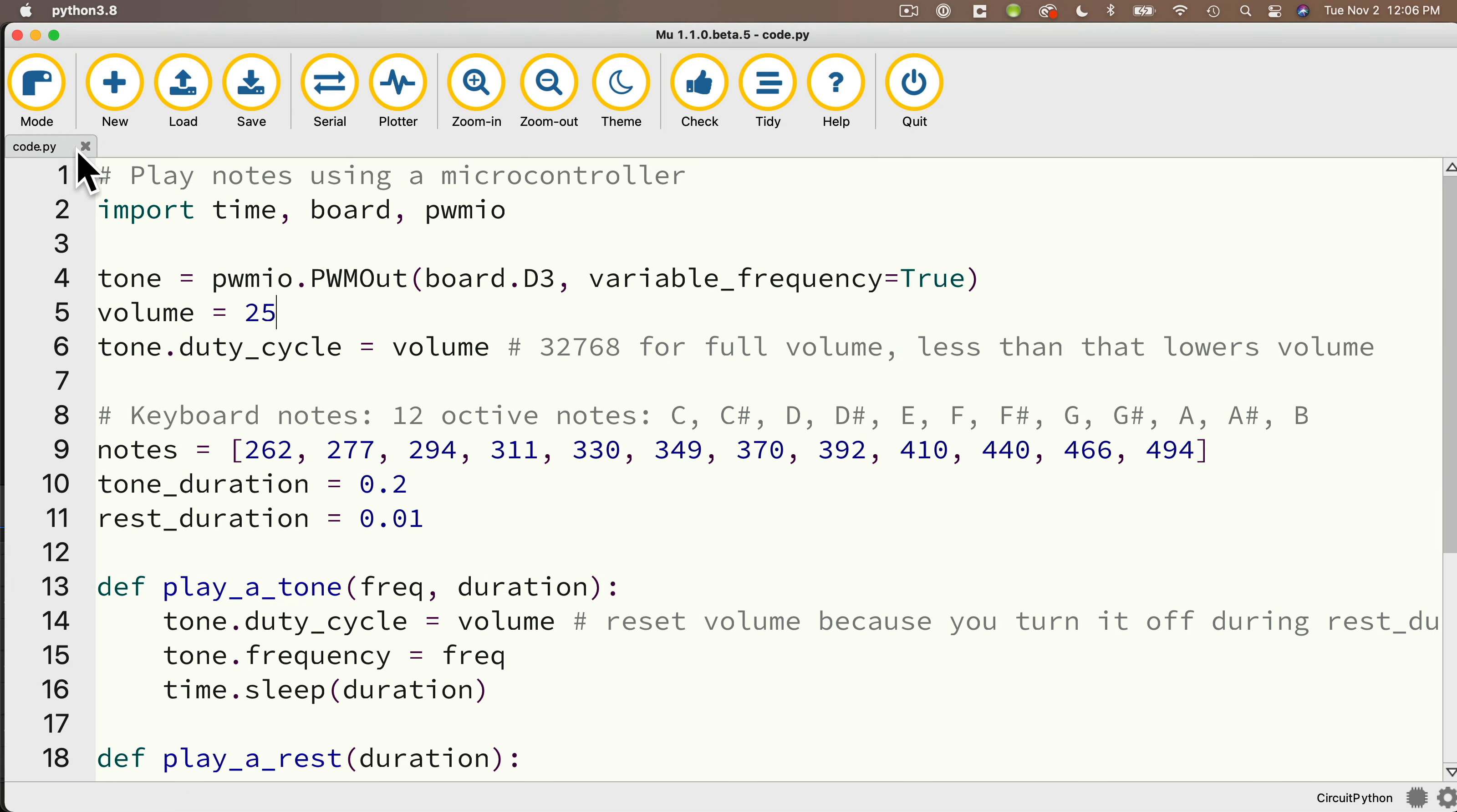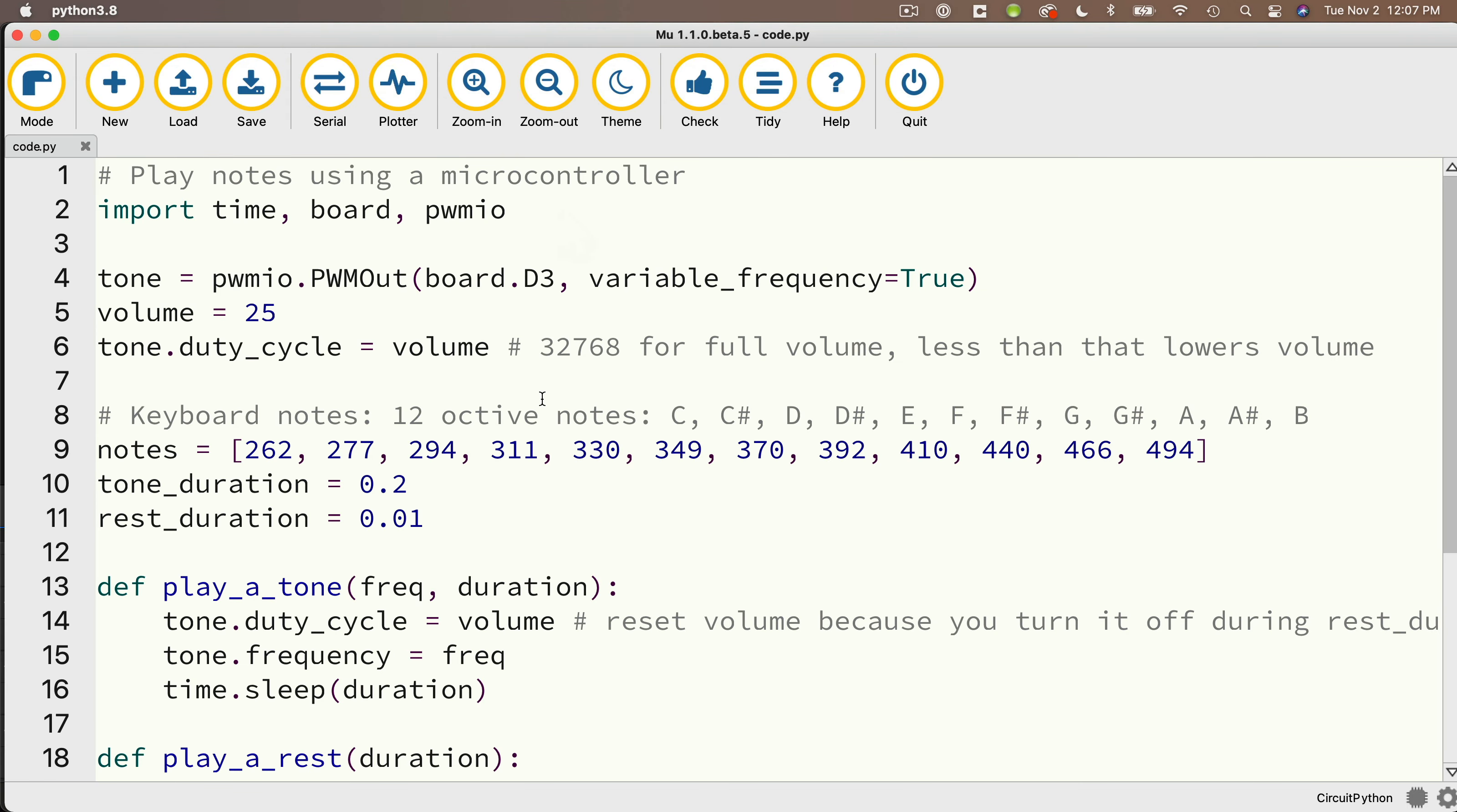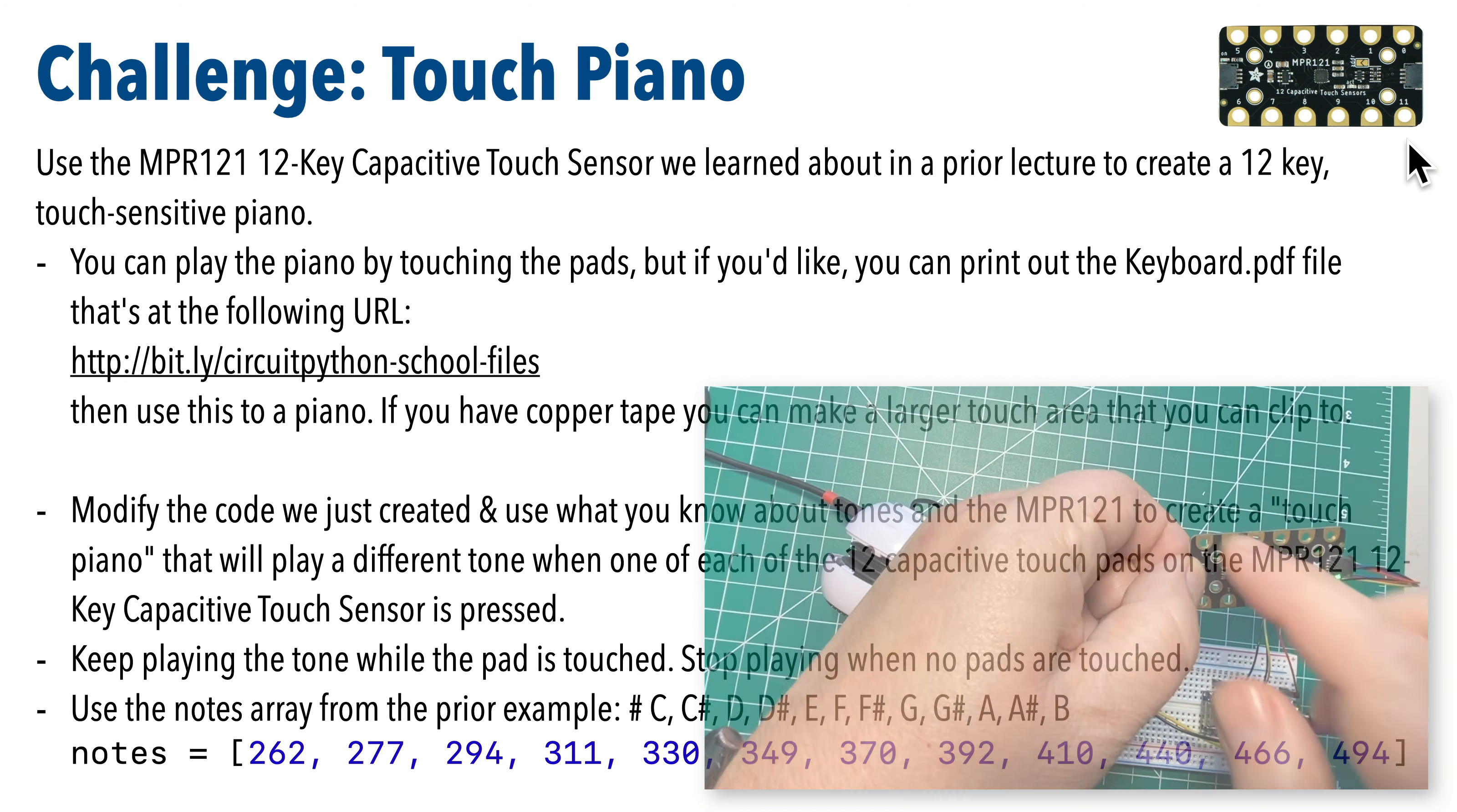Now it's time for a challenge. Before I tackle a challenge, I'm going to save this to my circuit python school folder and call it tones as notes so that I've got a backup and close this up and reopen code.py on my circuit pi volume. So here's your challenge: Use the MPR 121 12 key capacitive touch sensor that we learned about in the prior lecture to create a 12 key touch sensitive piano. This should play all of the notes in an octave. So you can play the piano by touching the pads on the sensor.